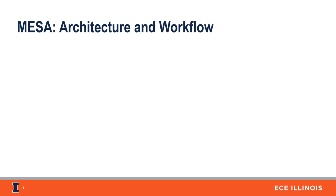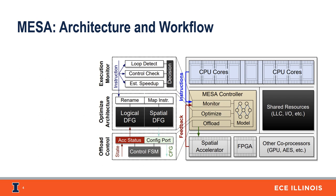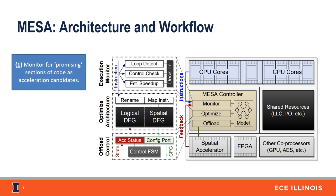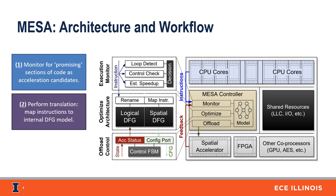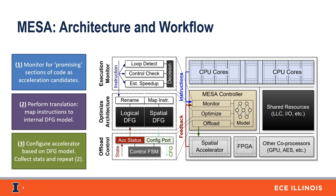At a high level, MESA works as follows. First, we monitor CPU execution for loops and functions that are suitable for acceleration — these are called acceleration candidates. Next, we translate these instructions to an accelerator configuration by building an internal data flow graph, or DFG, that is kept in hardware in the MESA controller. Finally, we configure the accelerator based on this DFG and allow dynamic offloading. After this, MESA monitors execution on the accelerator for opportunities to improve, and if found, repeats from step 2.